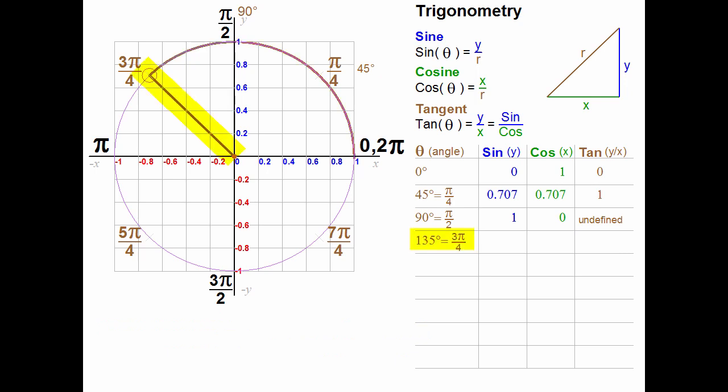At 3 pi over 4, or 135 degrees, which is 90 degrees plus 45 degrees, x is negative and y is still positive. The sine of 135 degrees is the same as the sine of 45 degrees, 0.707. In the second quadrant, x is negative. Its amplitude, or absolute value, is the same as x in the first quadrant. So the cosine is minus 0.707. The tangent is sine divided by cosine. Since the amplitude of both of the values is the same, but one of them is negative, then the tangent is minus 1.